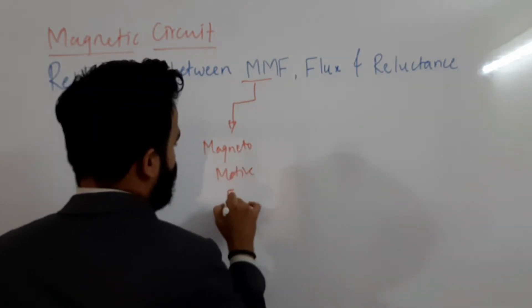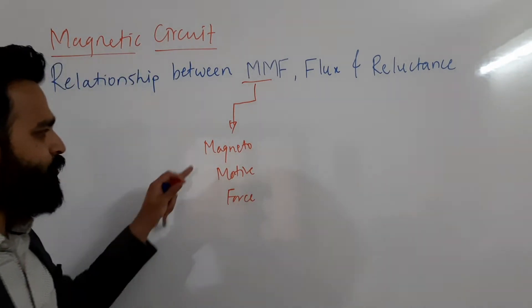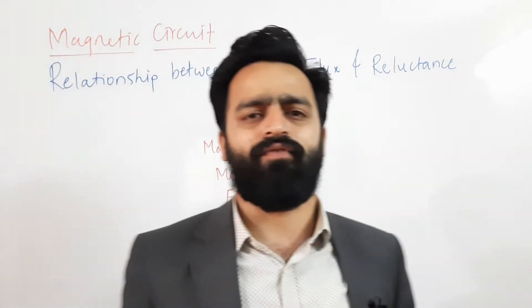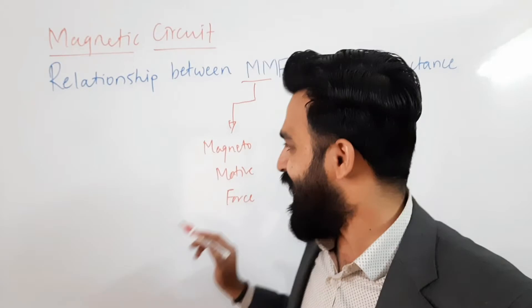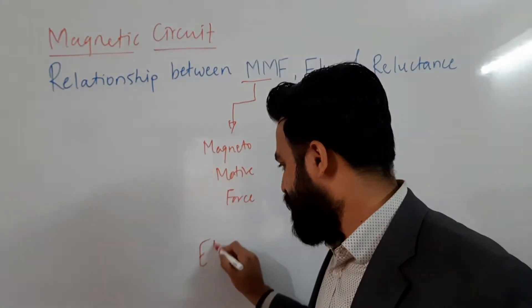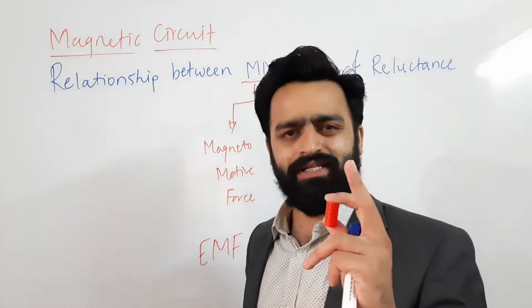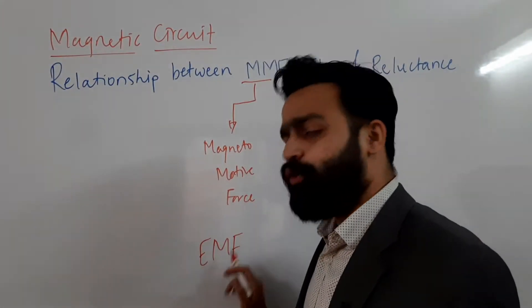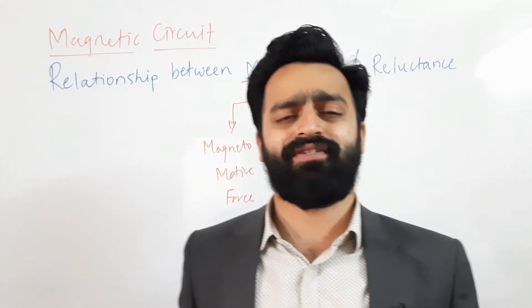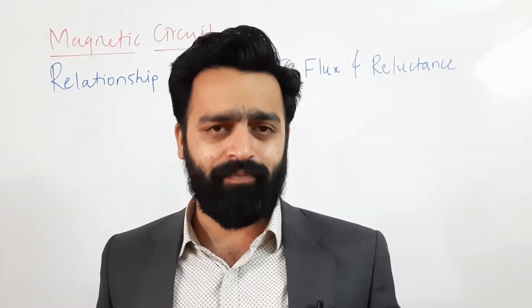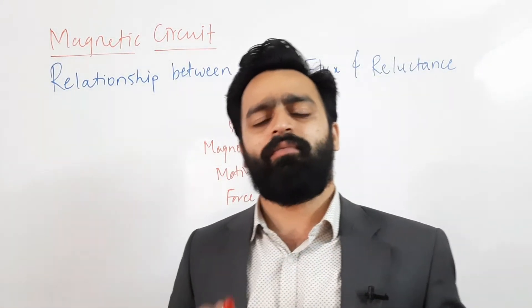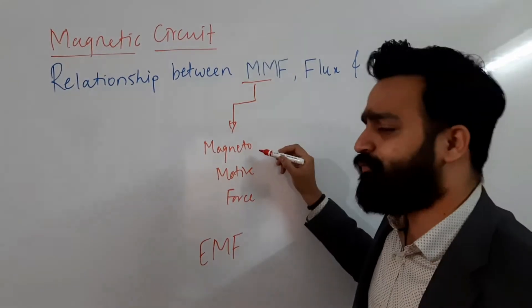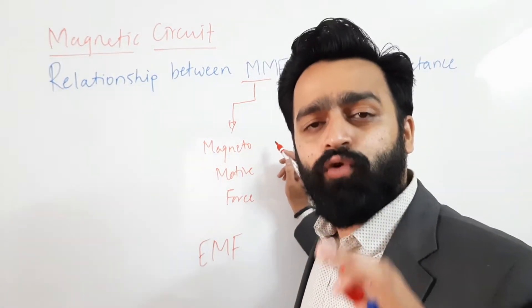Magnetomotive Force is the force responsible for generation and motion of flux in a magnetic circuit. This is analogous to EMF in the electrical circuit. Just as EMF, or electromotive force, causes current to flow due to a potential difference in an electric circuit, whenever there is magnetomotive force, only then will there be production and flow of flux in the magnetic circuit.